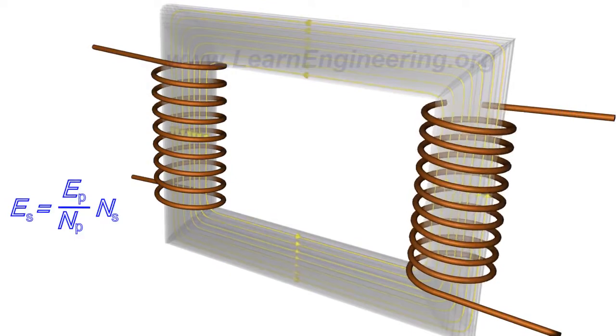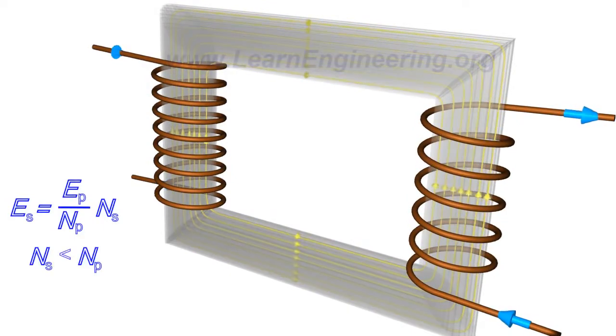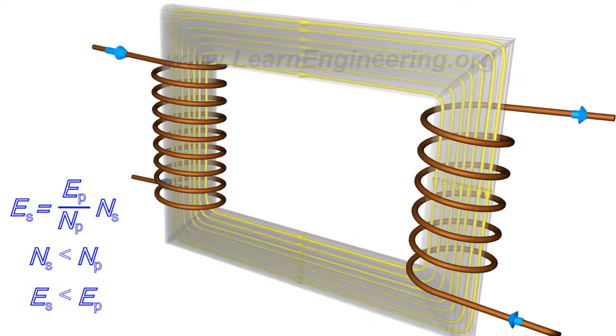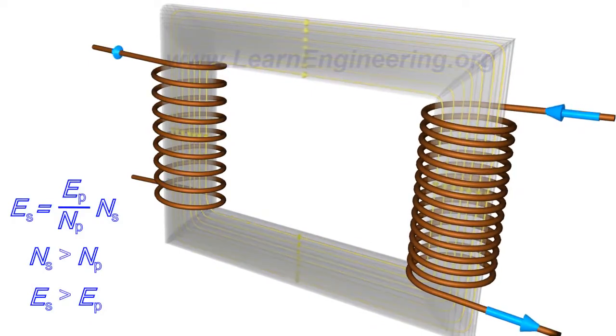This simply means that with fewer turns in the secondary than in primary, one can lower the voltage. For the reverse case, one can increase the voltage.